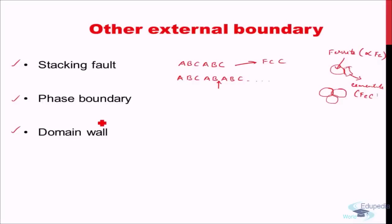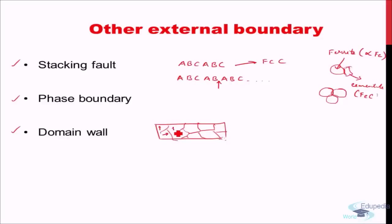A domain wall is relevant to magnetic materials. In a magnetic material there are different regions with effective magnetic orientations in different directions. The boundaries separating these different magnetic domains are known as domain walls. These are the different kinds of two-dimensional defects that can be present.